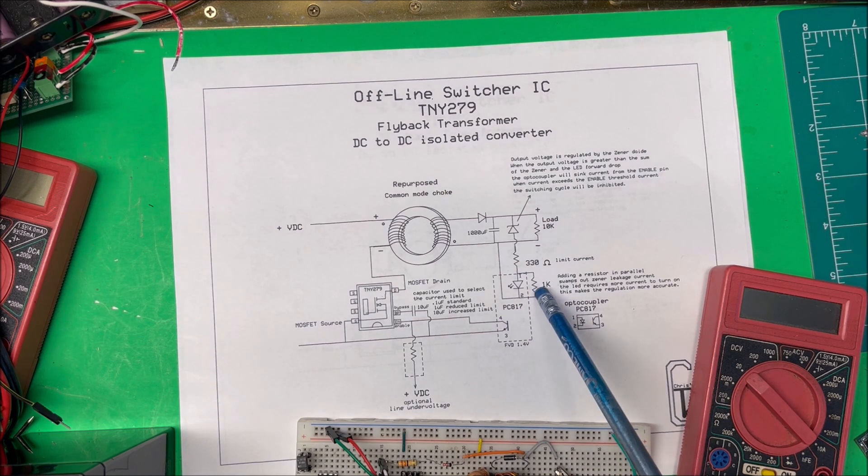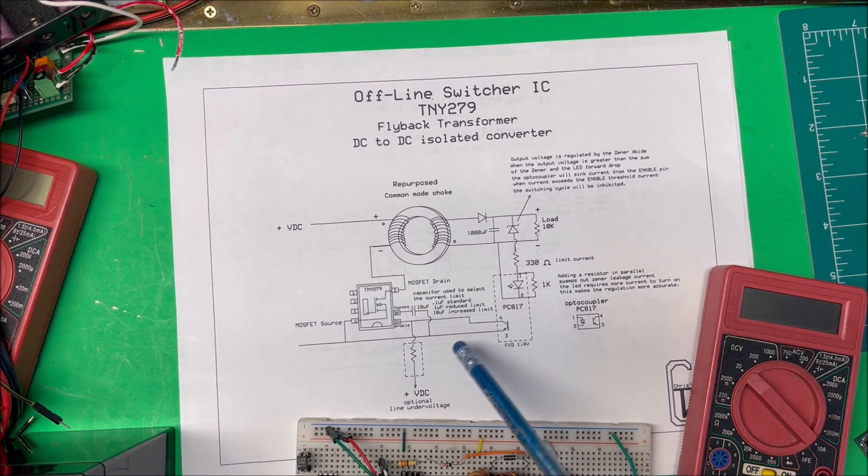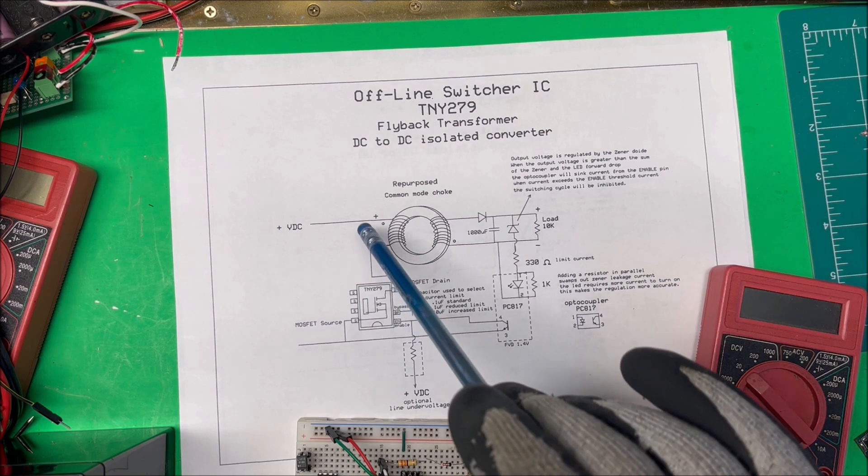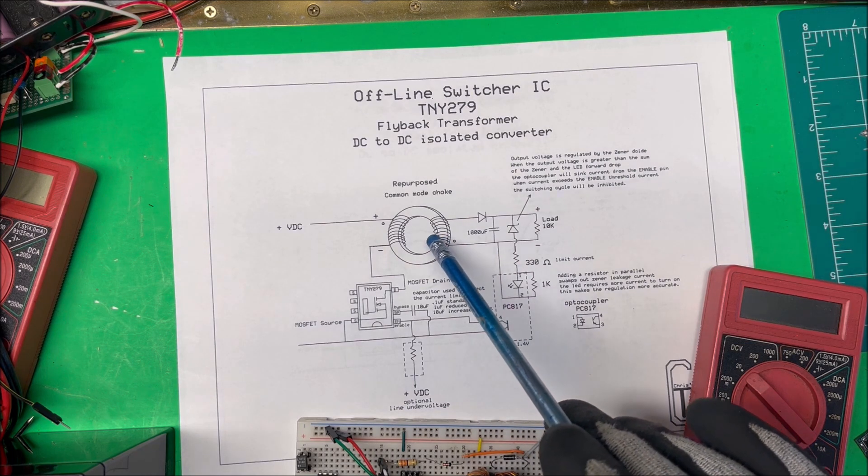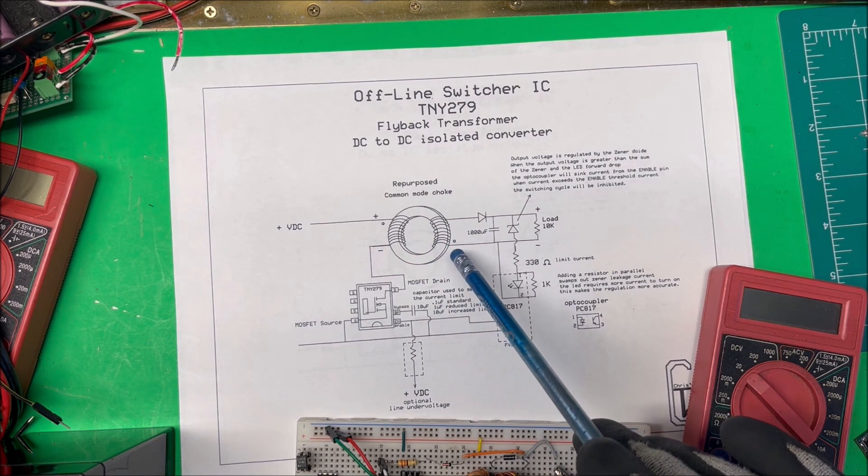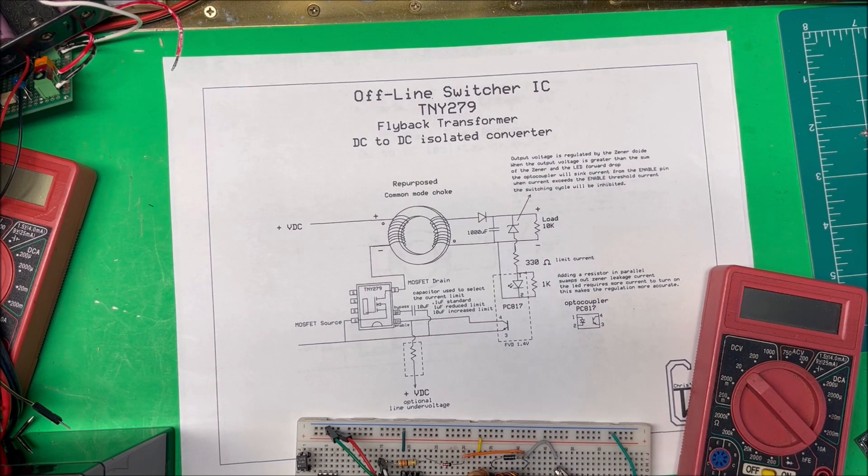You can put another resistor from the enable pin up to the positive - that's usually about a three megaohm resistor - and that will give us undervoltage protection. Some of the other ones will have an extra coil for overvoltage protection, but this is just going to be the simplest way to hook this chip up.